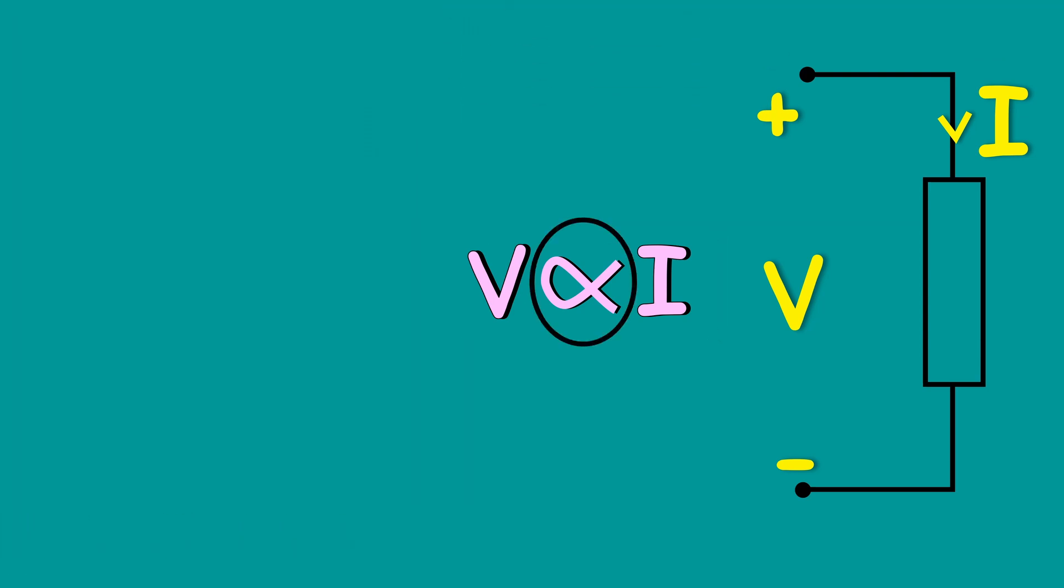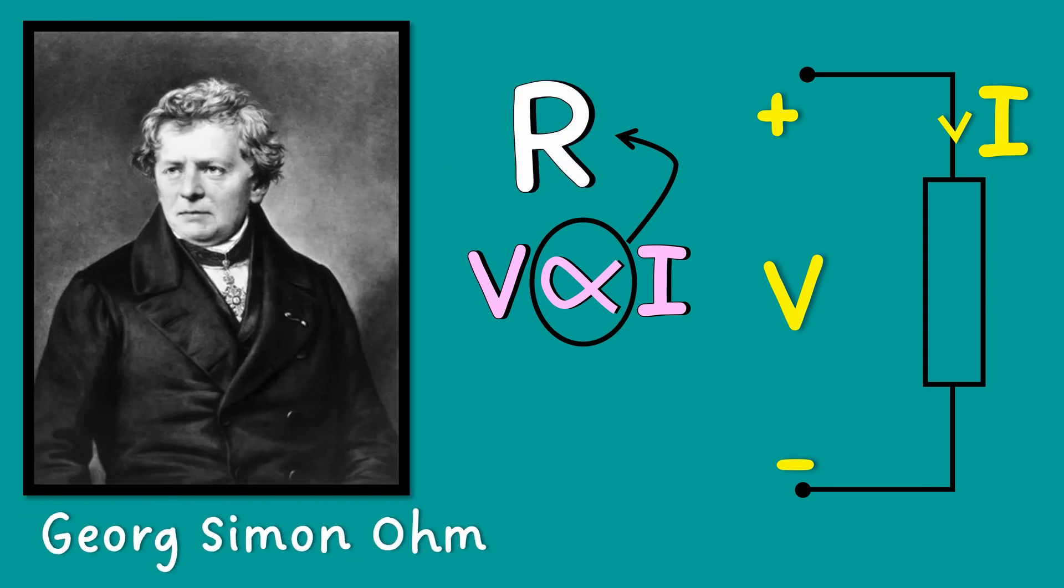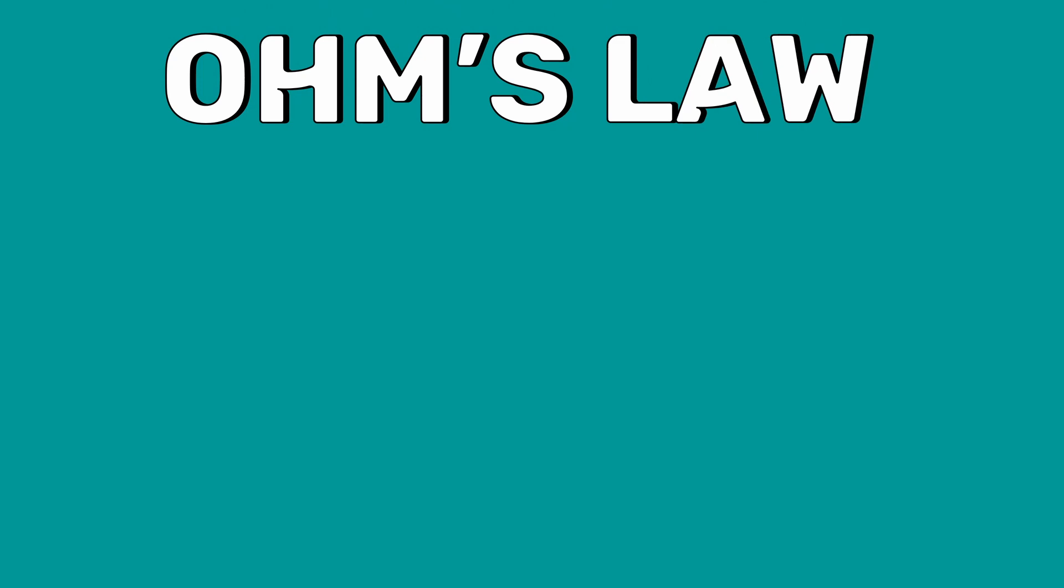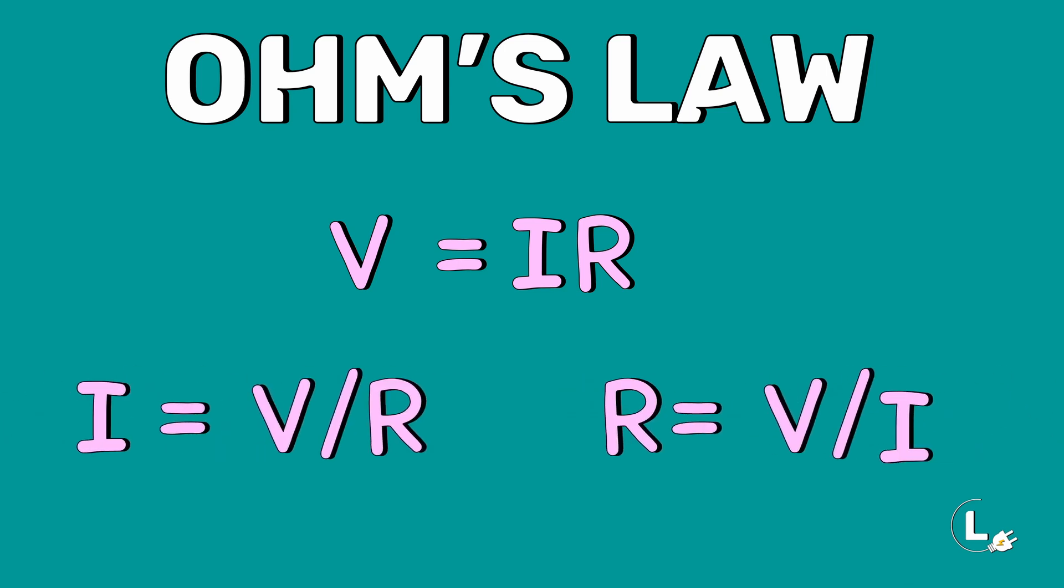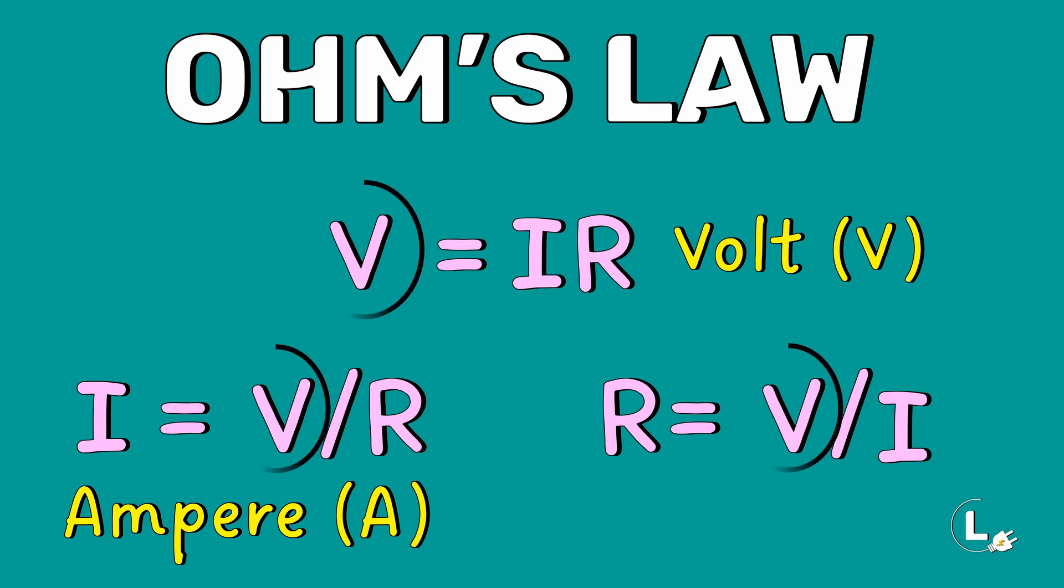Here, the constant of proportionality is the resistance R. Ohm was also honored after his death when his name was chosen as the unit of electrical resistance. Mathematically, Ohm's Law is represented by the formula V is equal to IR. Using simple algebra, this formula could be used to find the current and resistance values too. The unit of voltage is volt and the current is ampere. In some books, voltage is represented using the letter E. E stands for electromotive force.